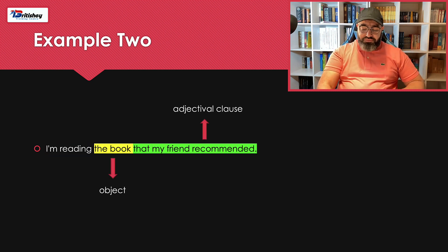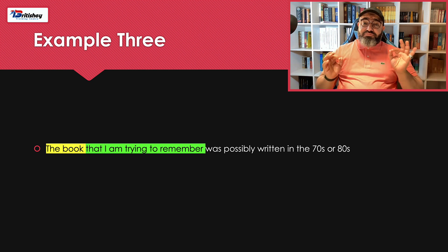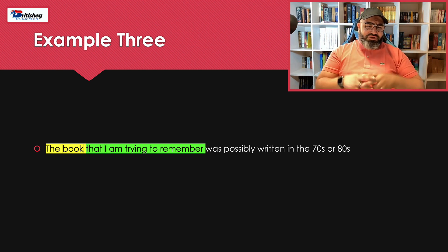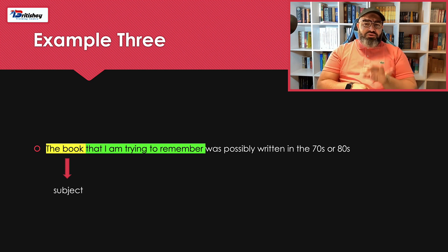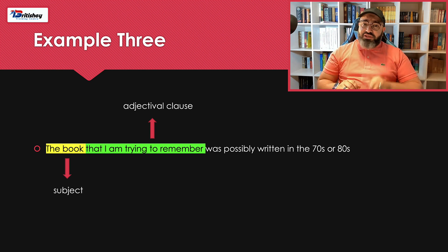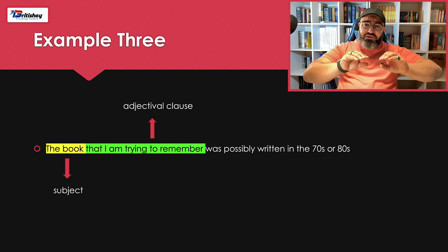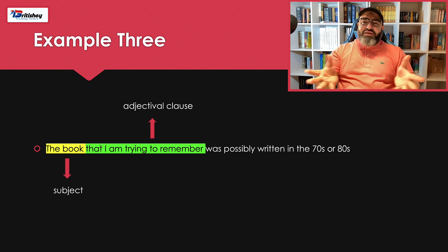Example three: 'The book that I am trying to remember was possibly written in the 70s or 80s.' Here 'the book' is a noun used as a subject, but this noun is described by an adjectival clause — 'that I am trying to remember.' Inside the adjectival clause we see the same three things: 'that' as the connector, 'I' as the subject, and 'trying' as the verb.